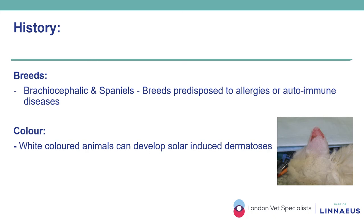History supplies vital, important information. Relevant points include breed predisposition. In fact, there are specific breeds such as brachycephalic dogs that are predisposed to development of facial fold dermatitis, or spaniels specifically to lip fold dermatitis. There are also breeds where genetic predisposition makes them prone to development of allergies and autoimmune diseases.